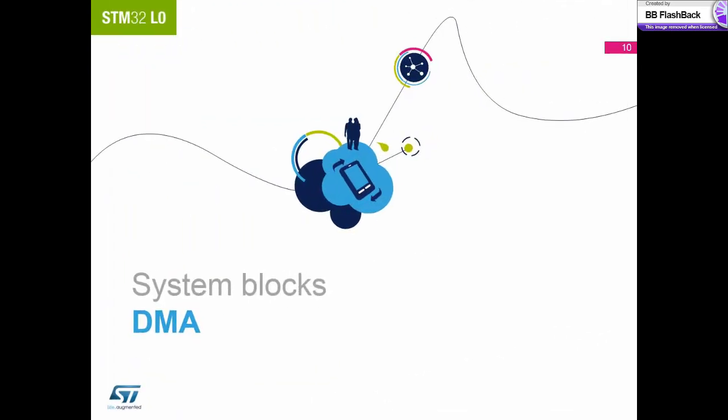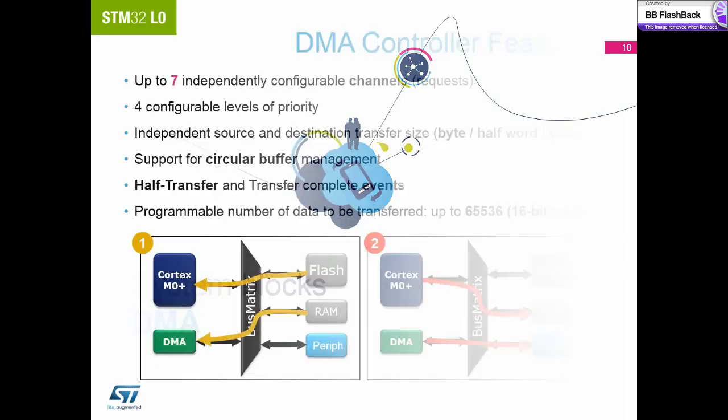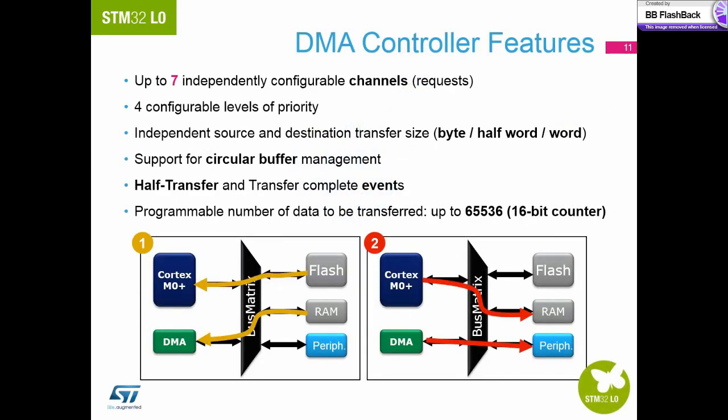Let's now take a look at some of the peripherals within the system block. The DMA controller is the second bus master and is used to relieve the Cortex core of data movement tasks. In picture one, the core can read instructions from the flash whilst the DMA reads data from the RAM. Then in picture two, the core can access the RAM whilst the DMA transmits the data it has just read from the RAM out to the peripherals. The DMA comprises seven configurable channels with configurable priority to do peripheral to memory, memory to peripheral, peripheral to peripheral, and memory to memory transfers.